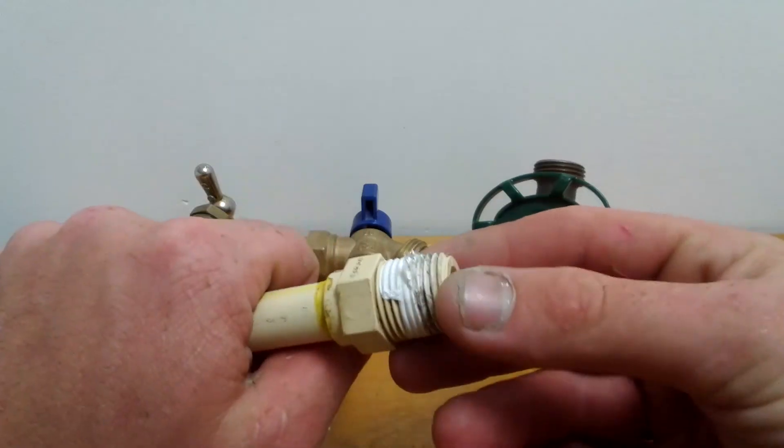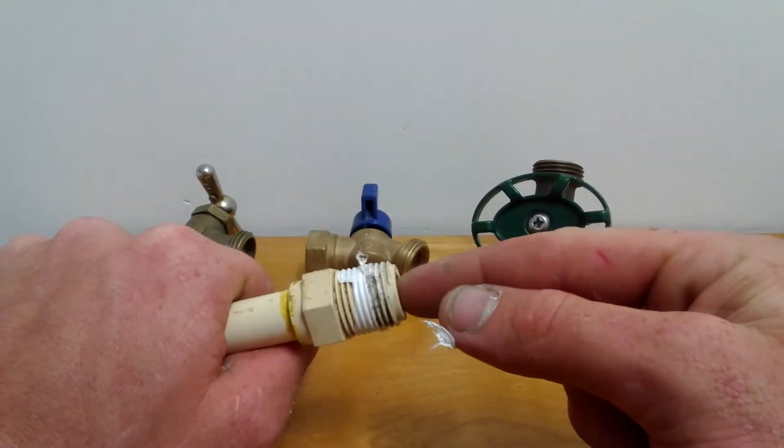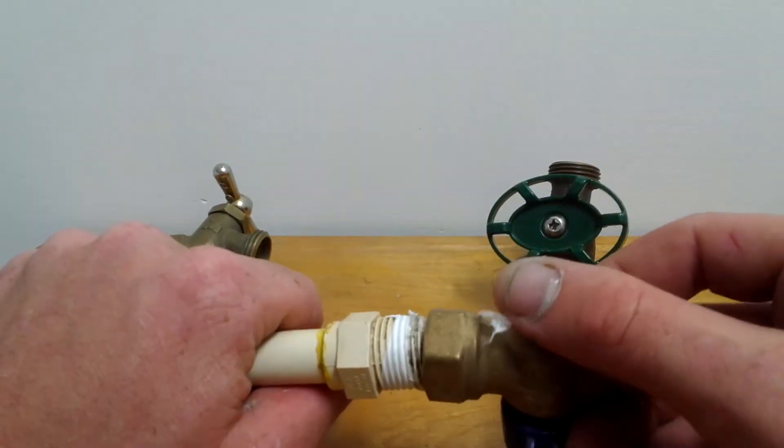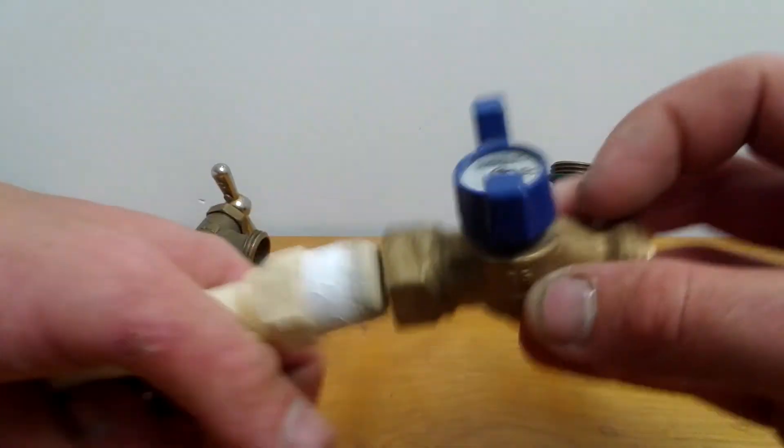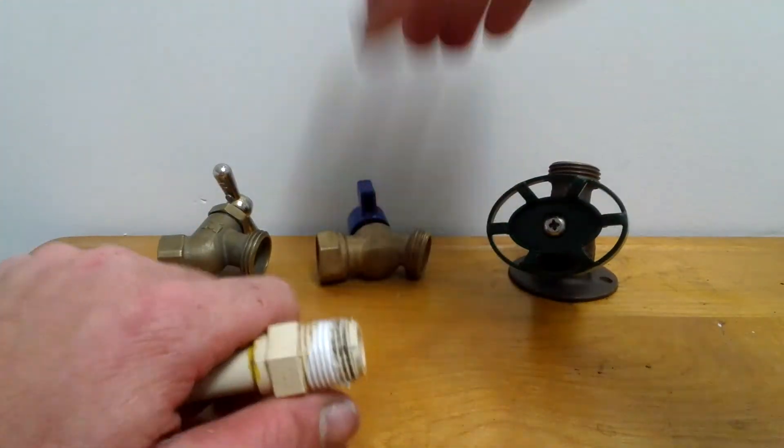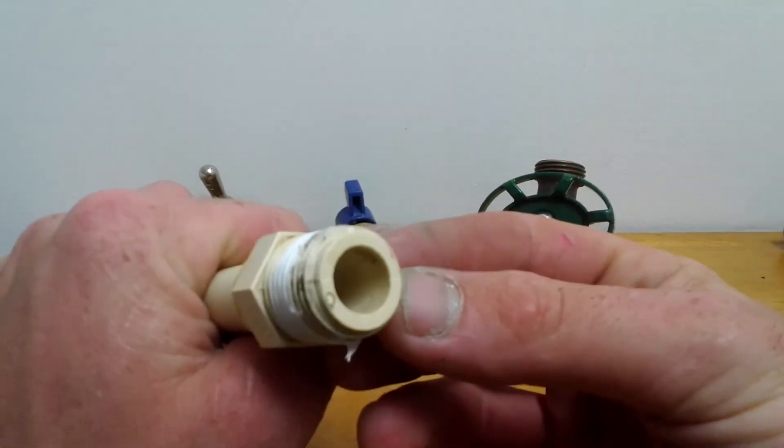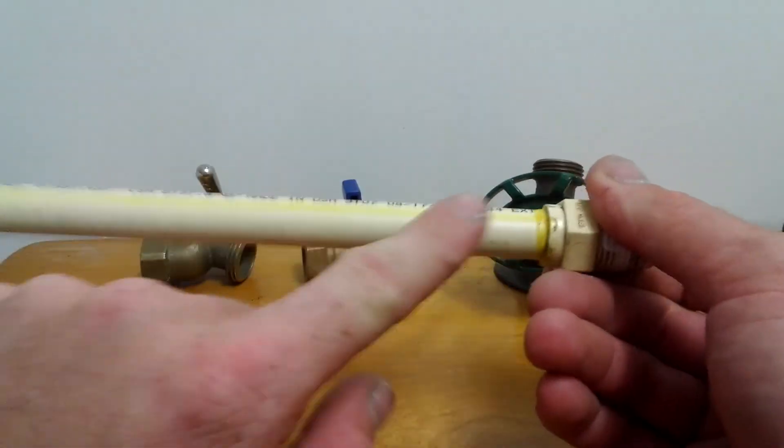And the only problem you'll have is if you're not careful you can cross these threads with this metal if you don't thread it on here right. You'll strip these threads and if you strip these plastic threads and you cannot get at this, you're gonna have a problem. That's why you gotta be careful doing that.